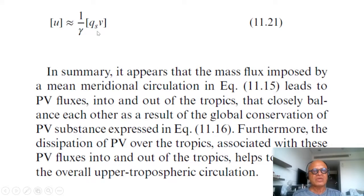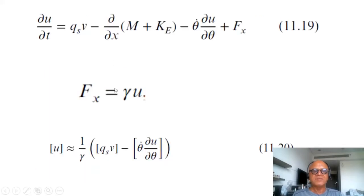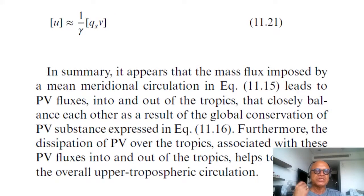Then the zonal average u is nearly equal to one over gamma qs v. That's a stunning result that is basically saying with this dissipation term, the dissipation, the meridional advection and dissipation of the PVS is part of the maintenance of the zonal mean zonal circulation.